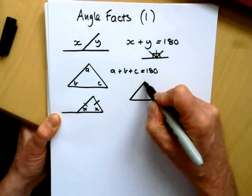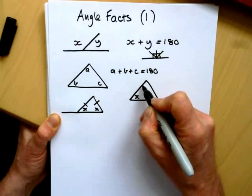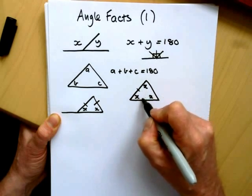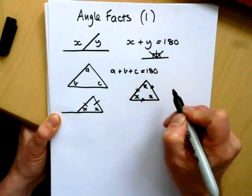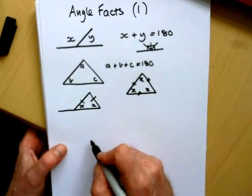And then finally, we have an equilateral triangle, where all the angles and all the sides are the same. So with those three facts, we can be asked lots of different types of questions. So here's a few.